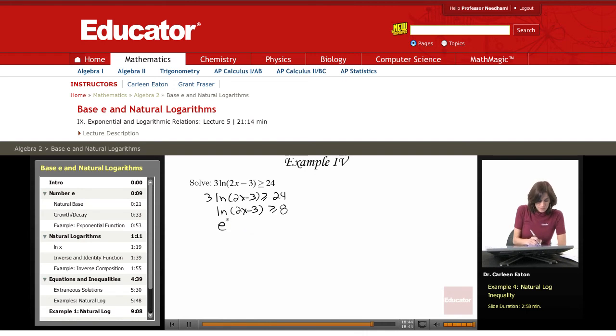I'm going to take powers of e of both sides. That's e^[ln(2x - 3)] ≥ e^8. Since these are inverses, they essentially cancel each other out, so I get 2x - 3 ≥ e^8.